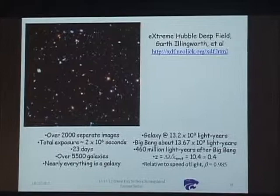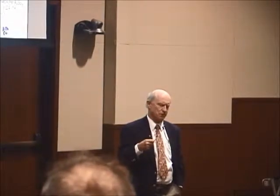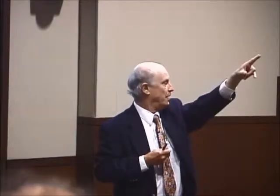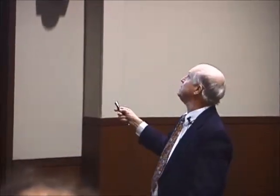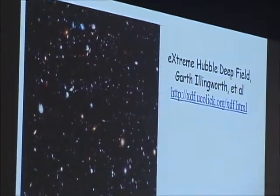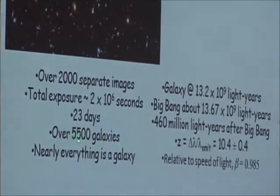Hubble has been doing deep surveys. Around 2000, the Space Telescope Science Institute decided they would pick a portion of the sky where there was nothing, and they would stare. They called these the deep surveys, and they saw tons of galaxies. They did more and more of these — this is called the Extreme Deep Field: 2000 separate images, 23 days of exposure. You know, it's a 95-minute orbit, so at most you can get 45 minutes per orbit. This thing contains somewhere around 5,500 or so galaxies.